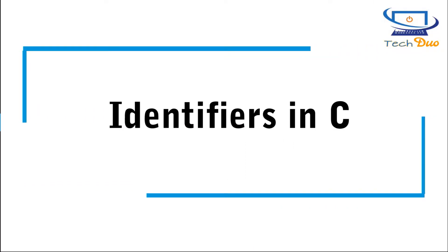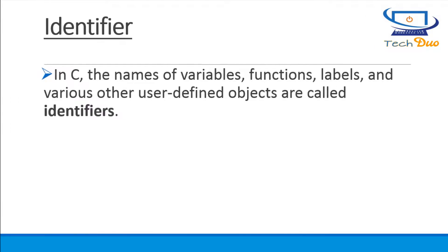Identifiers in C. In C, the names of variables, functions, labels, and various other user-defined objects are called identifiers.